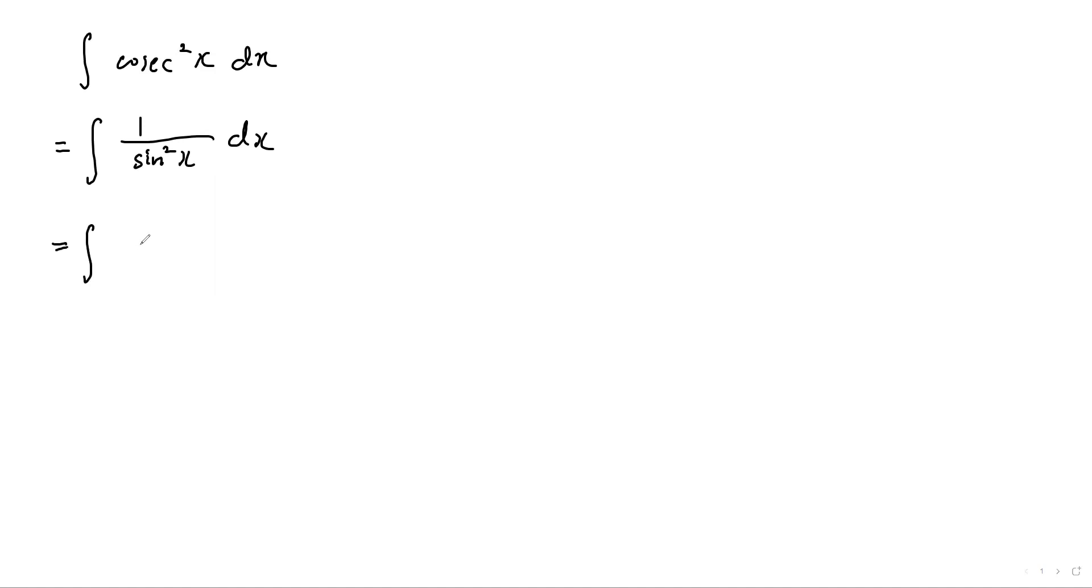I have to do a little bit of manipulation here. I'm going to divide the numerator and denominator by cosine-square. So we're going to have 1 over cosine-square-x over sine-square-x divided by cosine-square-x, which would be tangent-square-x.